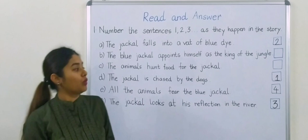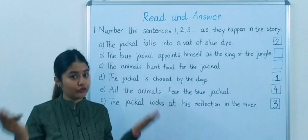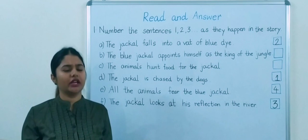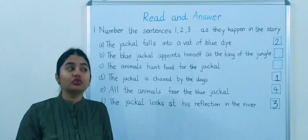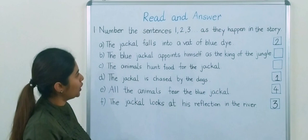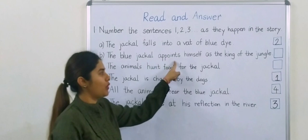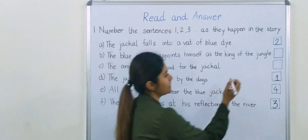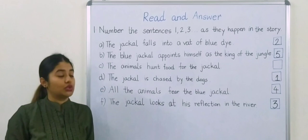Then what happened next? He told all the animals that he was created by Lord Brahma, who is the lord of all creations, and that he has sent him to be their king, to look after them and to protect all the animals. So next will be, the blue jackal appoints himself as the king of the jungle. So this will be point number 5.